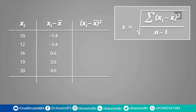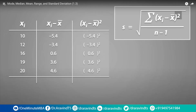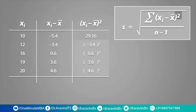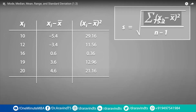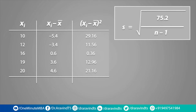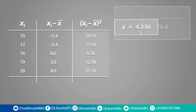The next step is to square what we have just calculated. Negative 5.4 squared is 29.16, negative 3.4 squared is 11.56, and so on. The next step is to find the sum of what we have just calculated — you should find that this is equal to 75.2. Remember that we used this table to calculate the numerator of the formula, so we can now replace it with 75.2. N refers to the total number of data values, and there are 5 data values, so n equals 5. We can simplify this and we end up with a standard deviation equal to 4.336.